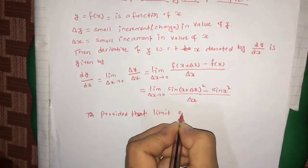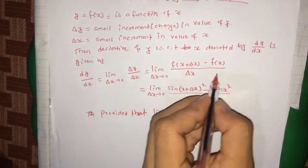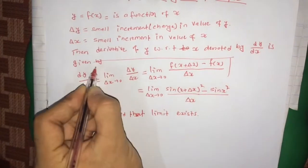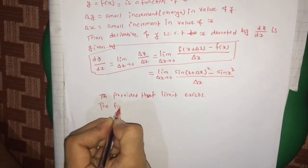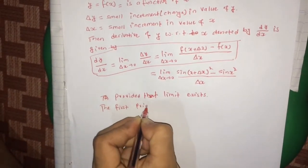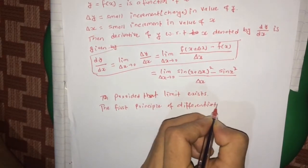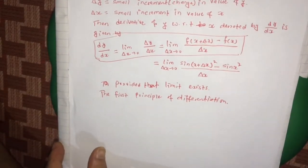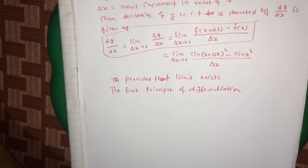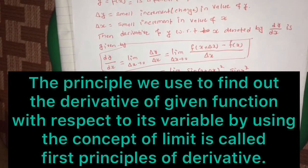Provided that the limit exists. The derivative in this form is called the first principle of derivative or differentiation. The process of finding the derivative of any given function with respect to its variable is called differentiation, and the principle used is called the first principle of differentiation.